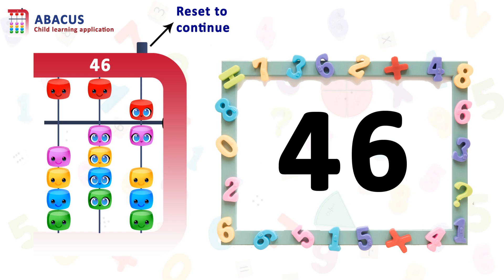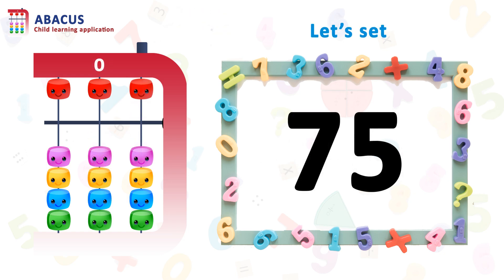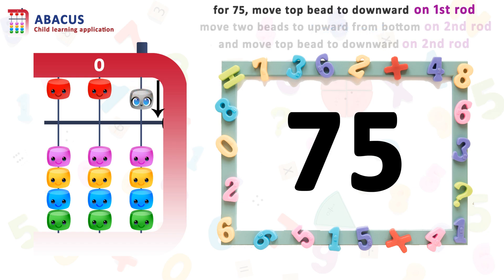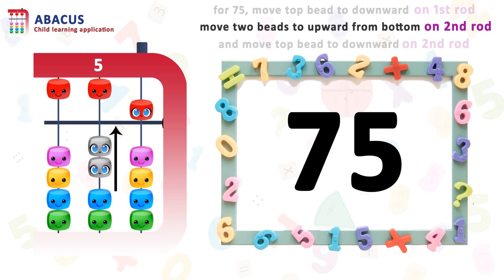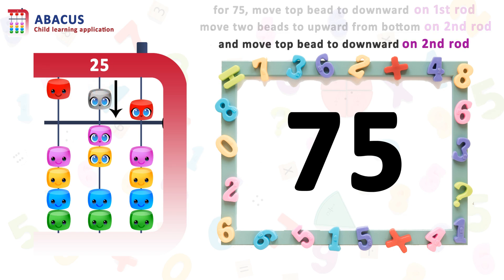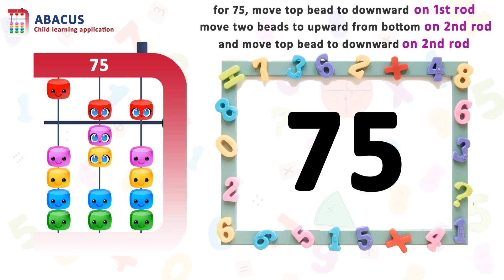Let's see one more example. Here we have the number 75. So let's set 75. For 75, first we have to set 5 on rod 1 — move the top bit downward above the beam on the first rod. Now for 7, move 2 bits upward from the bottom below the beam on rod 2, and then move the top bit downward above the beam on rod 2. And finally we have set 75. It's easy, right?